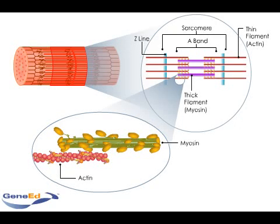The A-bands run the entire length of thick myosin filament, and also include the overlapping portions of thin and thick filaments, where myosin knobs and actin interact. The I-bands, exclusively made of thin filaments, alternate with A-bands.